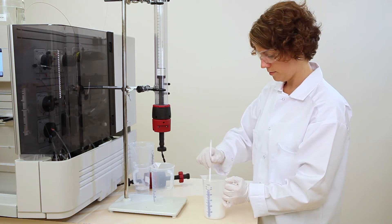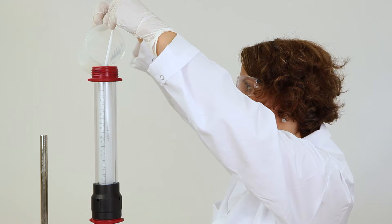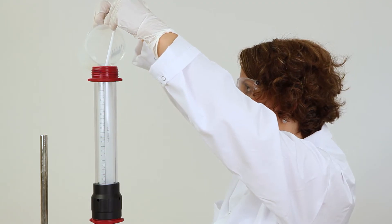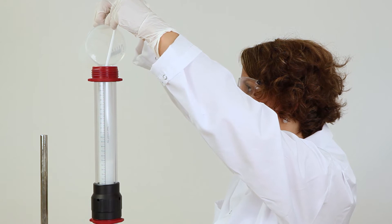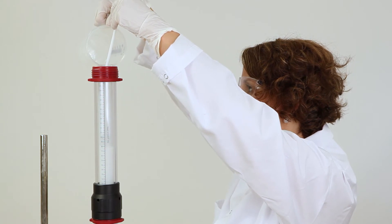Suspend the medium in the packing solution using a spatula. Pour the medium into the column. Avoid spillage and formation of air bubbles by decanting down a spatula.